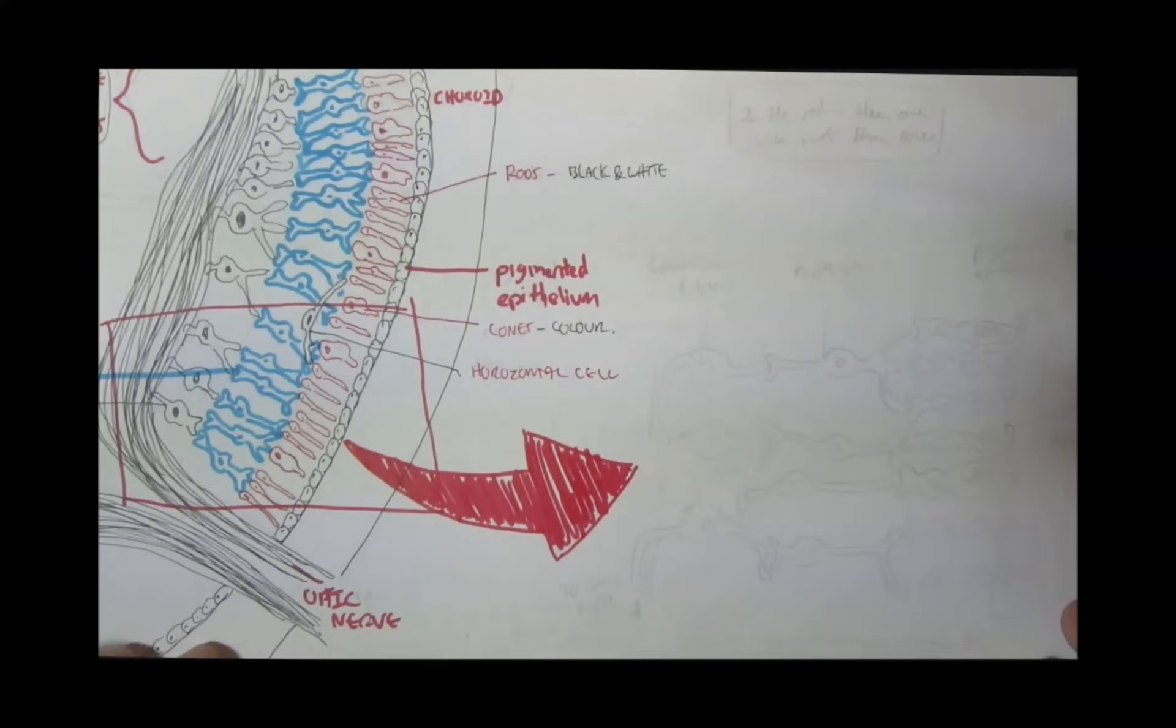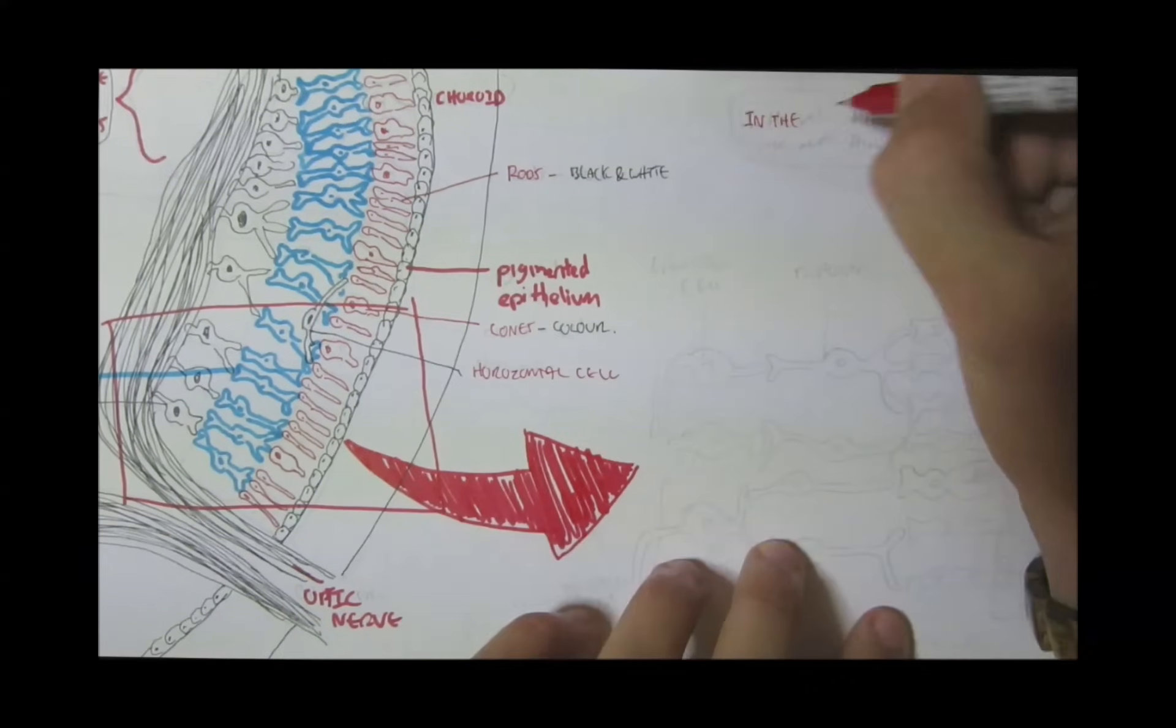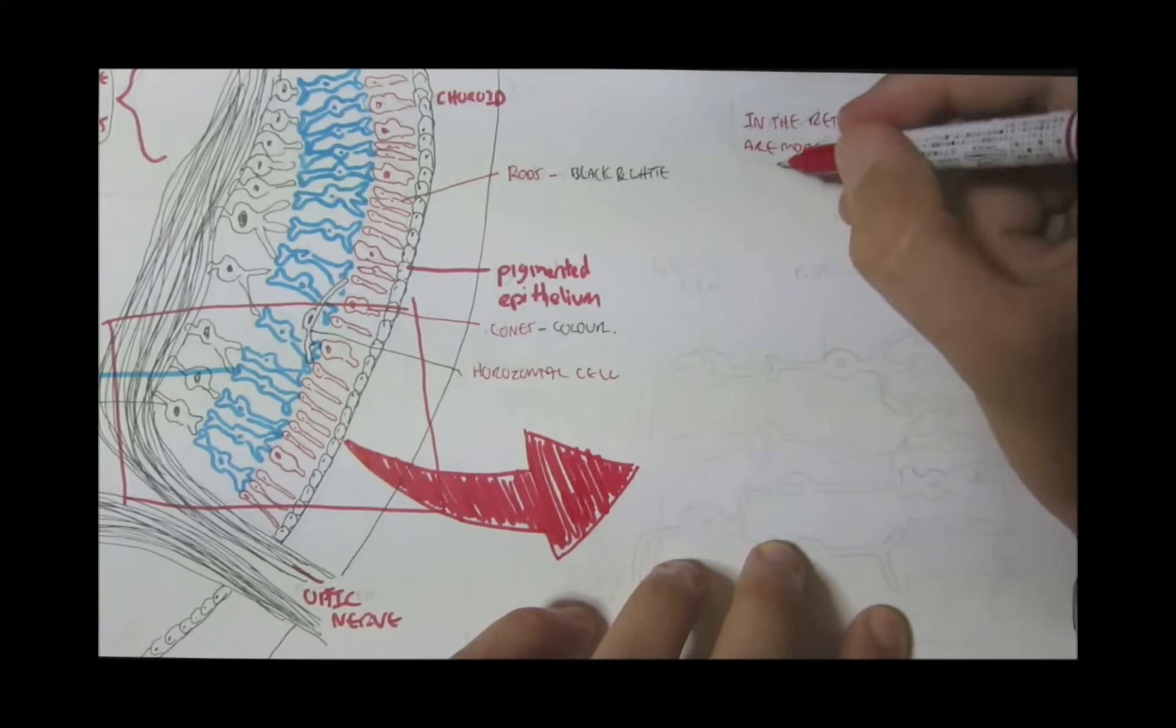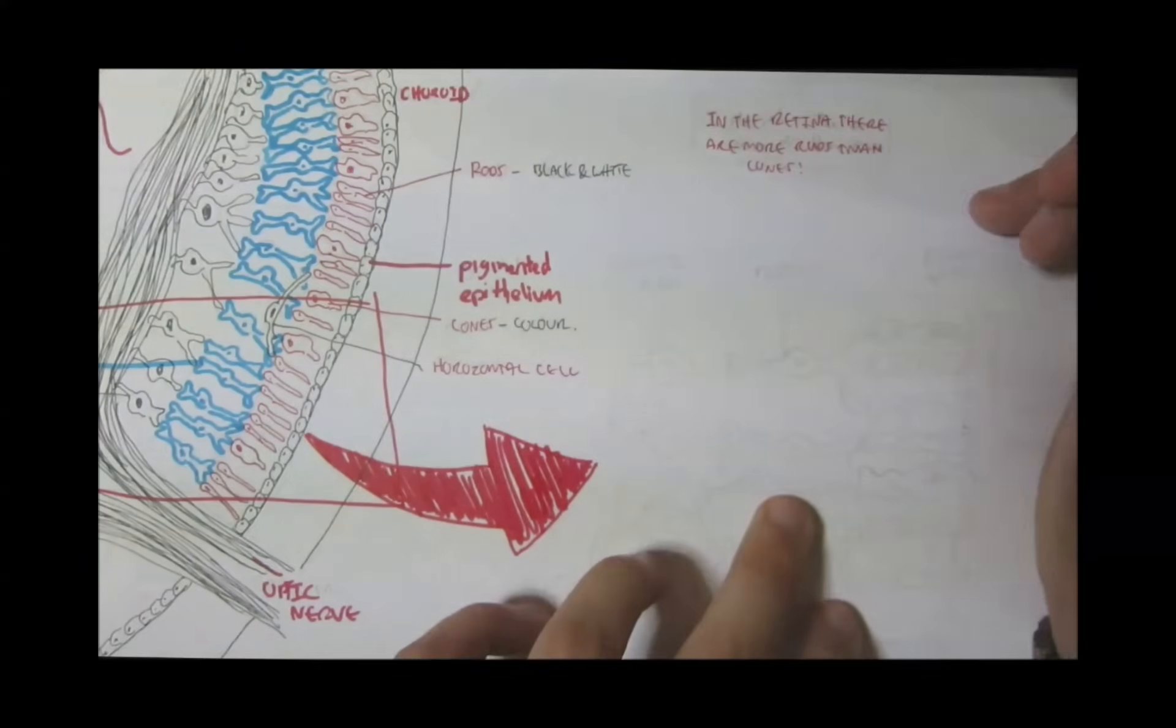Now, it is important to know that in the retina there are more rods than cones. This is because black and white are more important. Think about it.